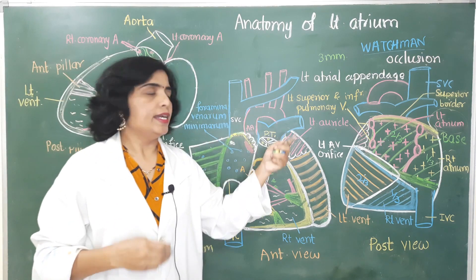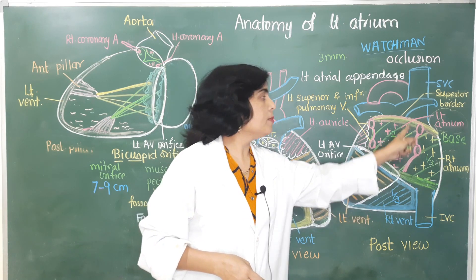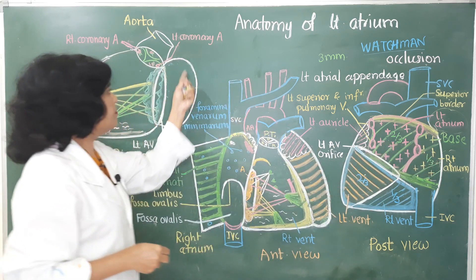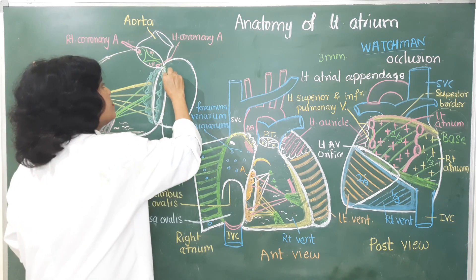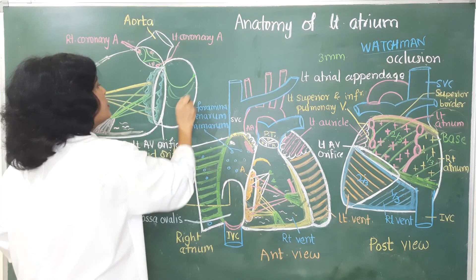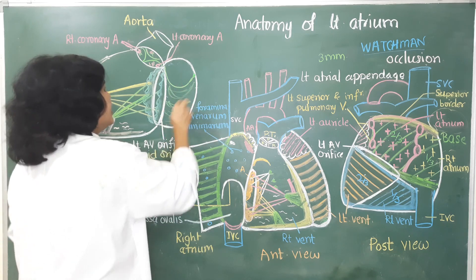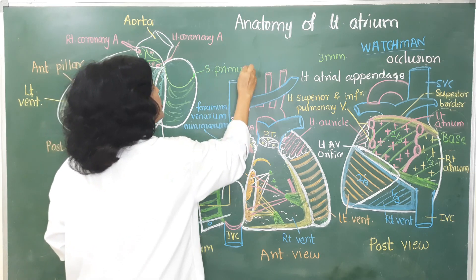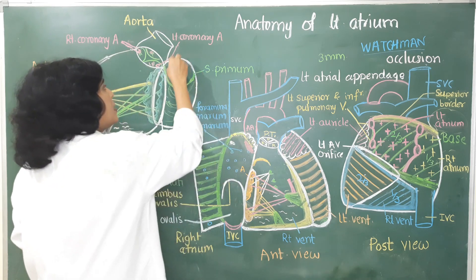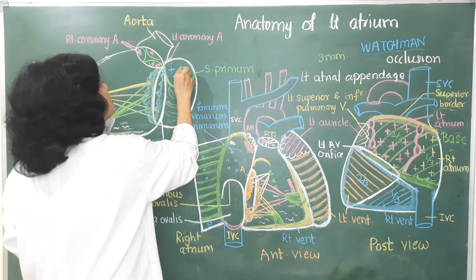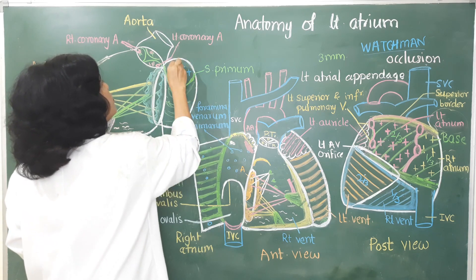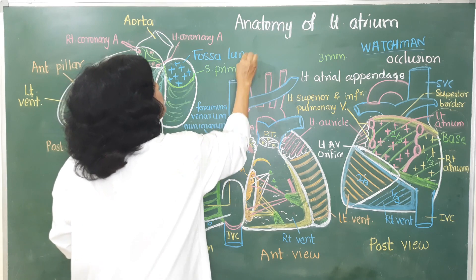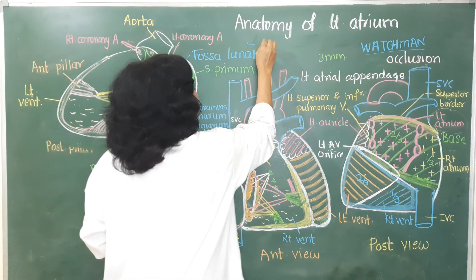The interior of the left atrium also shows a septal wall formed by the interatrial septum, which divides the left atrium from the right atrium. This septal wall shows the presence of a semilunar fold, which is concave upwards. This semilunar fold is derived from the upper free margin of the septum primum during development. This semilunar fold bounds a fossa in the upper part; the shape of this fossa resembles the moon, so it is called the fossa lunata.